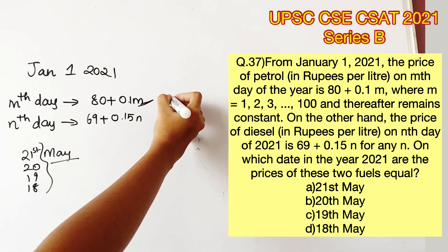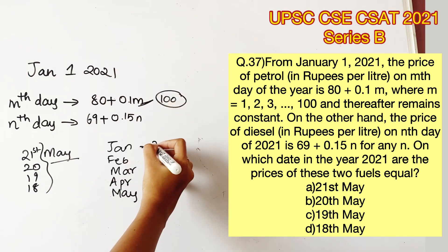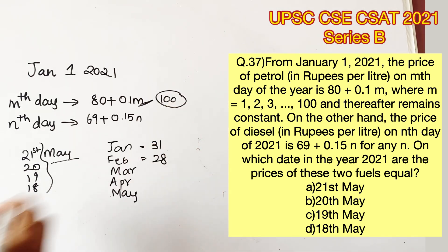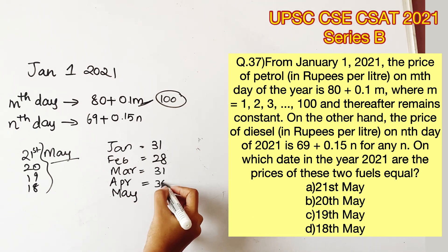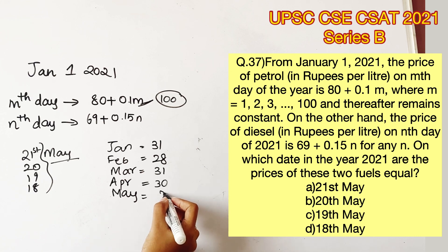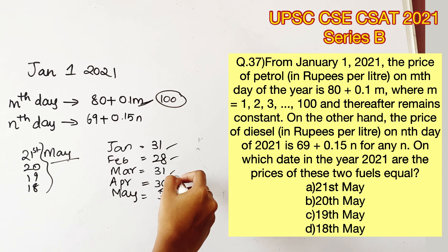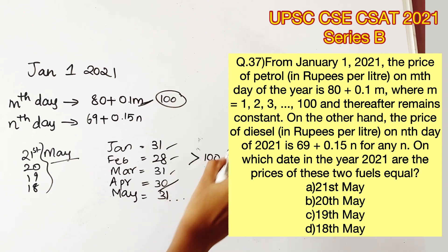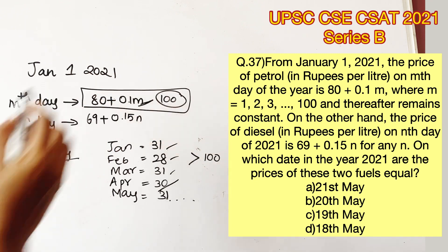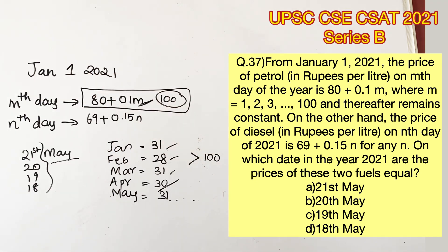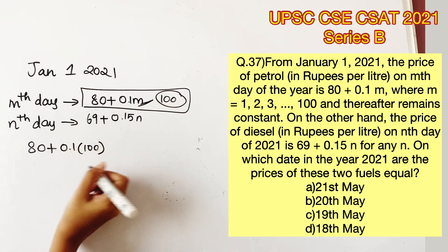Each month contains approximately 30 days: January has 31, February has 28 (since 2021 is not a leap year), March has 31, and April has 30. Adding up January through April gives a value greater than 100. So in the month of May, the value of m is only going to be 100, because after 100 m is said to be constant.